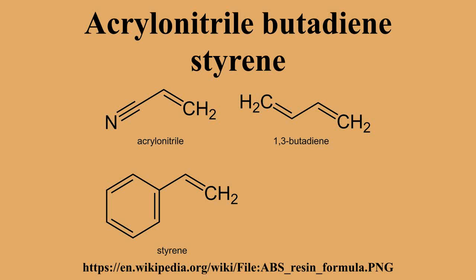ABS is derived from acrylonitrile, butadiene, and styrene. Acrylonitrile is a synthetic monomer produced from propylene and ammonia. Butadiene is a petroleum hydrocarbon obtained from the C4 fraction of steam cracking. Styrene monomer is made by dehydrogenation of ethyl benzene, a hydrocarbon obtained in the reaction of ethylene and benzene.